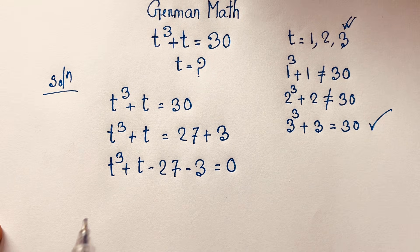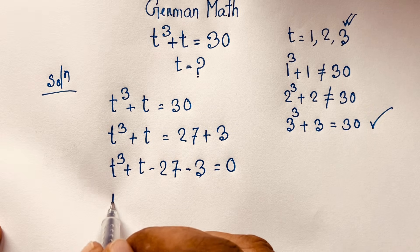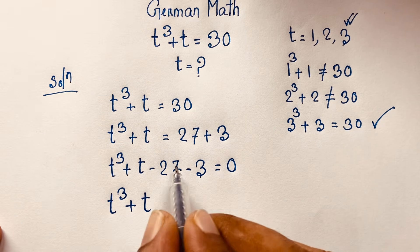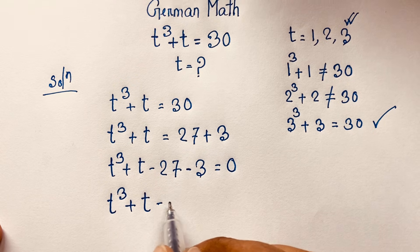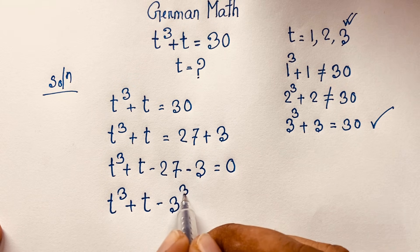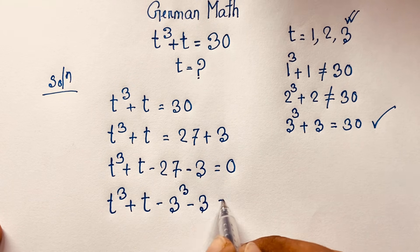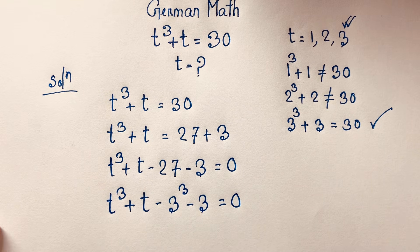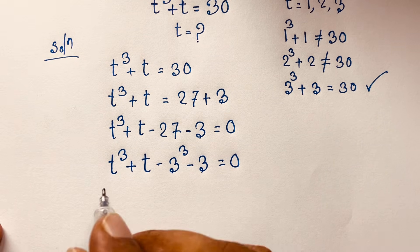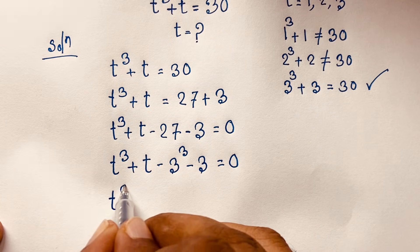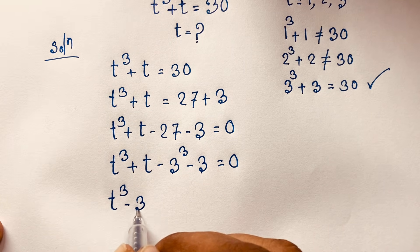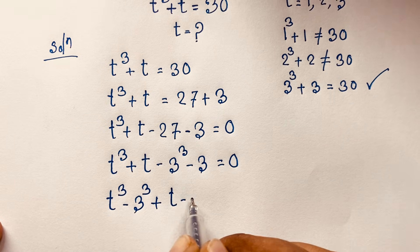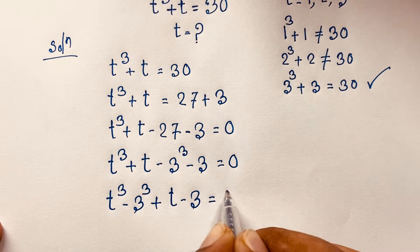Now you can see this is t to the power 3 minus 27, which is t to the power 3 minus 3 to the power 3, plus t minus 3 is equal to 0. I solve this interesting maths question step by step.